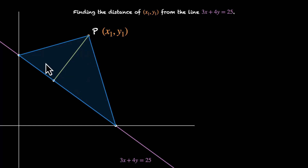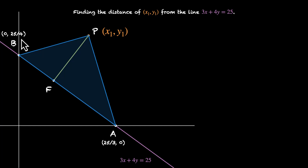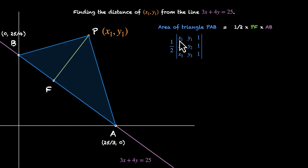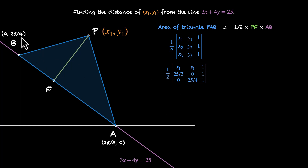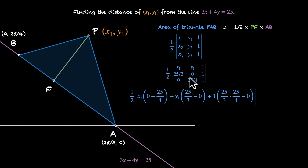By now you know how to find the area of this triangle and how to find the base. This point is F, this is A at (25/3, 0), and this is B at (0, 25/4). Area of triangle PAB equals half times PF times AB. Using the determinant formula: area equals half of the determinant with rows (x1, y1, 1), (25/3, 0, 1), (0, 25/4, 1). Opening the determinant, we get half times [x1 times (0 minus 25/4) minus y1 times (25/3 minus 0) plus 1 times (25/3 times 25/4 minus 0)].